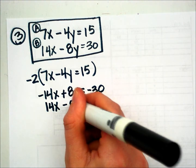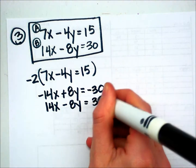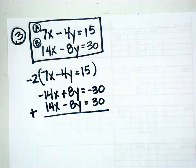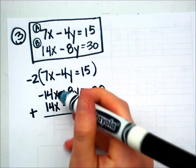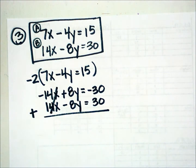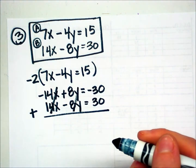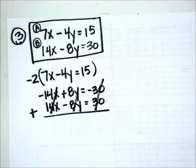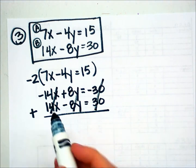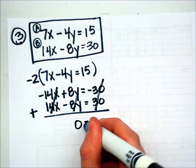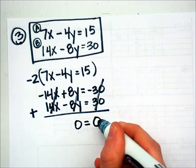I'm writing equation B underneath and I'm going to add these. My intention was to get rid of the x values, to cancel out the x's. They cancel when I add those two together. I also see that the y's cancel, and negative 30 and positive 30 cancel. So essentially what you're left with on the left is 0, and what you're left with on the right is also 0.